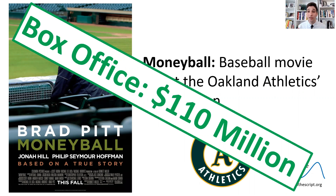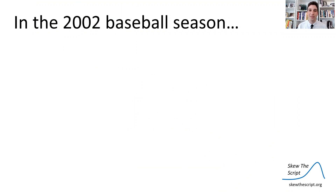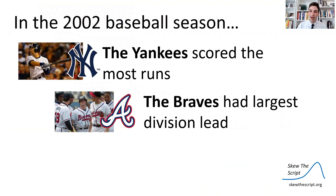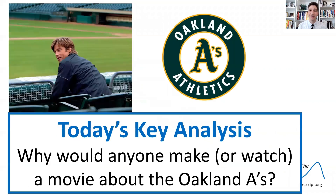For those of you in Gen Z who don't know what a movie theater is, this is the amount of money they made when they showed the movie in theaters before streaming. Anyway, it's weird that the movie was so popular because in the 2002 season, the New York Yankees scored the most runs, the Atlanta Braves had the largest division lead, and the Anaheim Angels won the World Series — not the Oakland Athletics. So today's key analysis is: why would anyone make or even watch a movie about the Oakland Athletics?